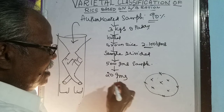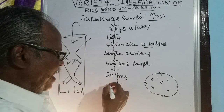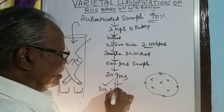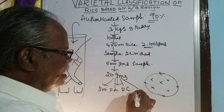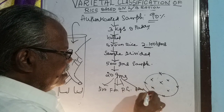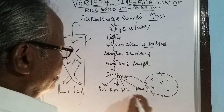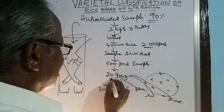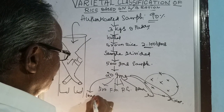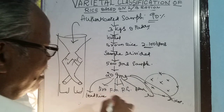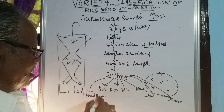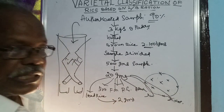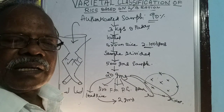From these 20 grams, we remove all the fractions — broken grains, foreign matter, red grains, admixture, damaged grains, and discoloured grains. What remains is called head rice, which is free from all fractions. From this head rice, 2 grams is taken for LB ratio measurement.